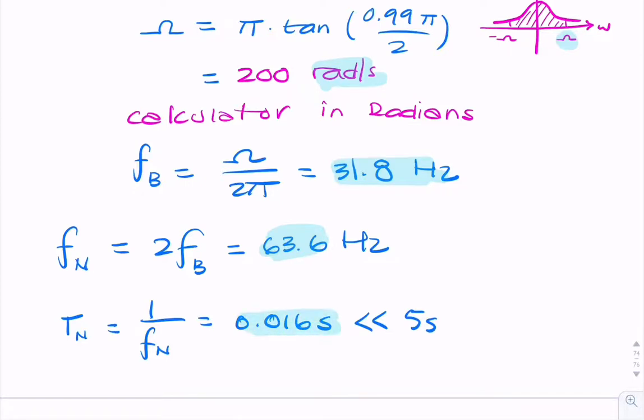So the sample period is much smaller, or the sample period that we're using in the question is much higher than the Nyquist rate. In this case, if we want to find the sample rate, that will be 1 over 5, which is 0.2 hertz. So the 0.2 hertz is much smaller than the Nyquist rate.